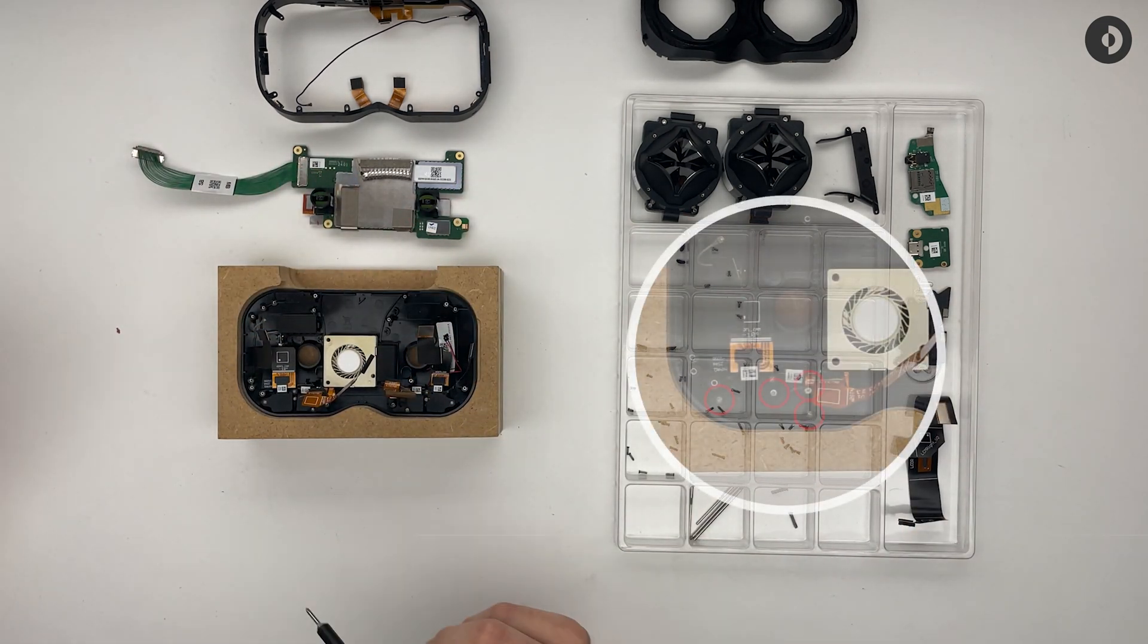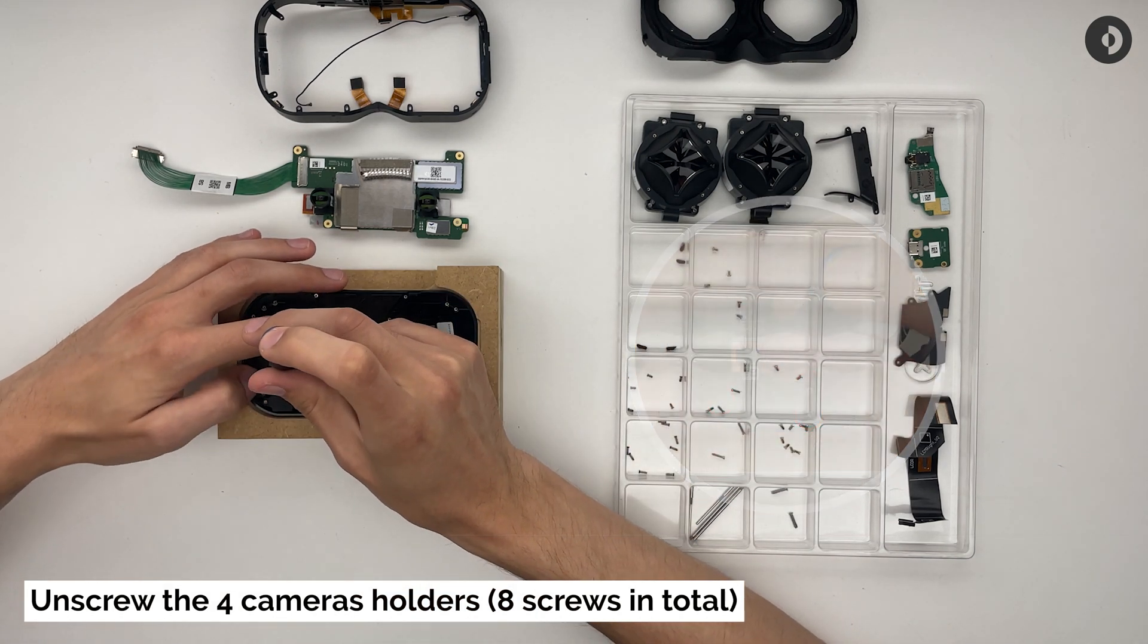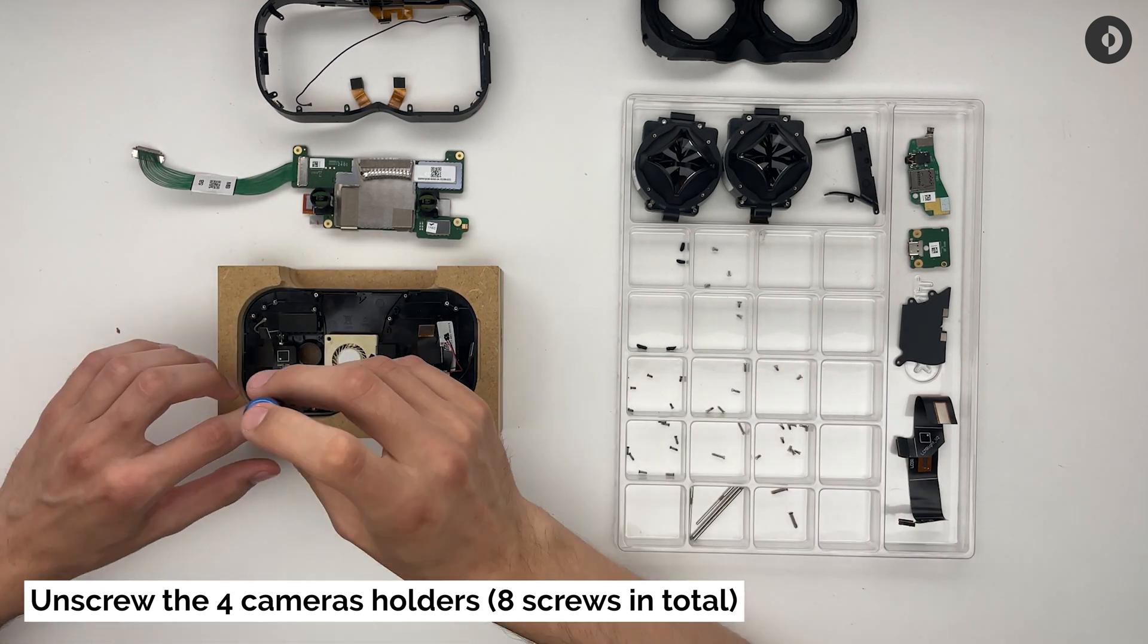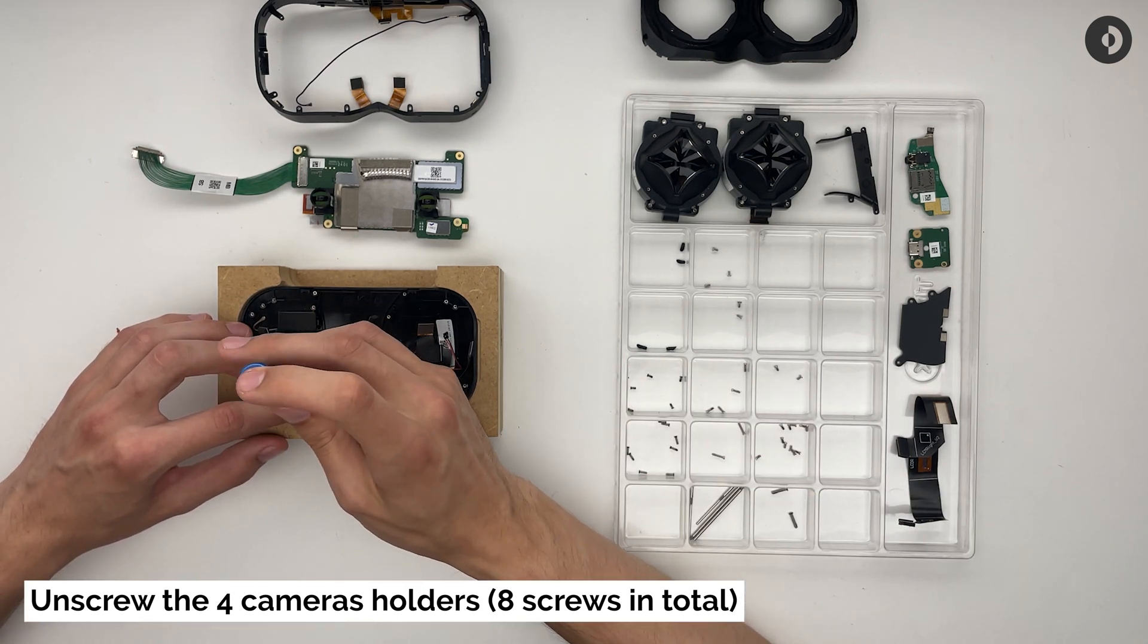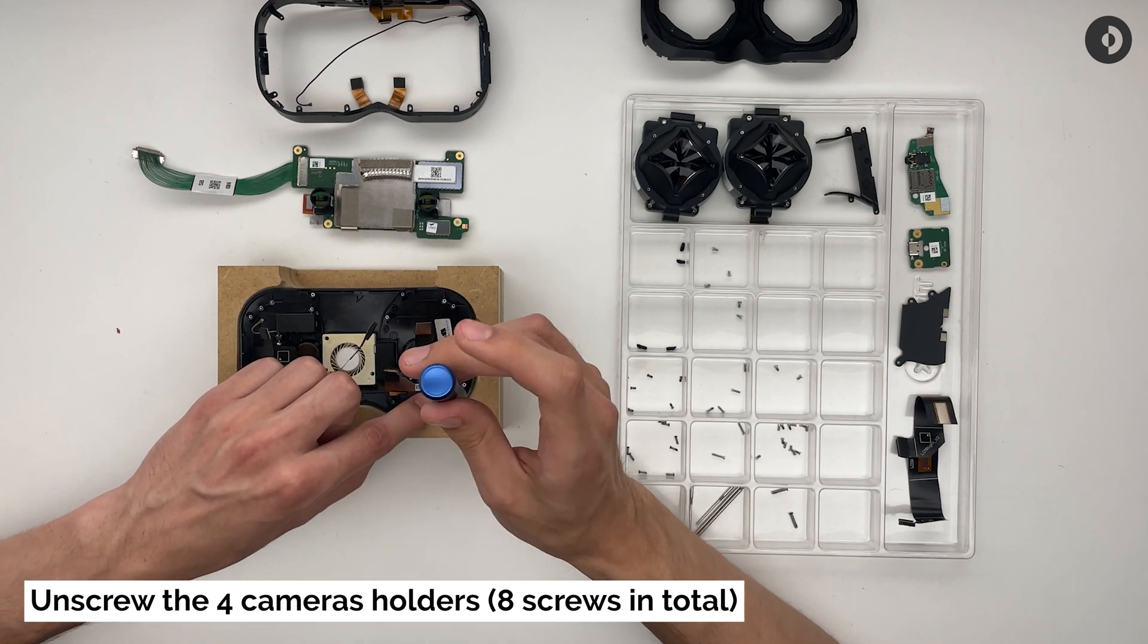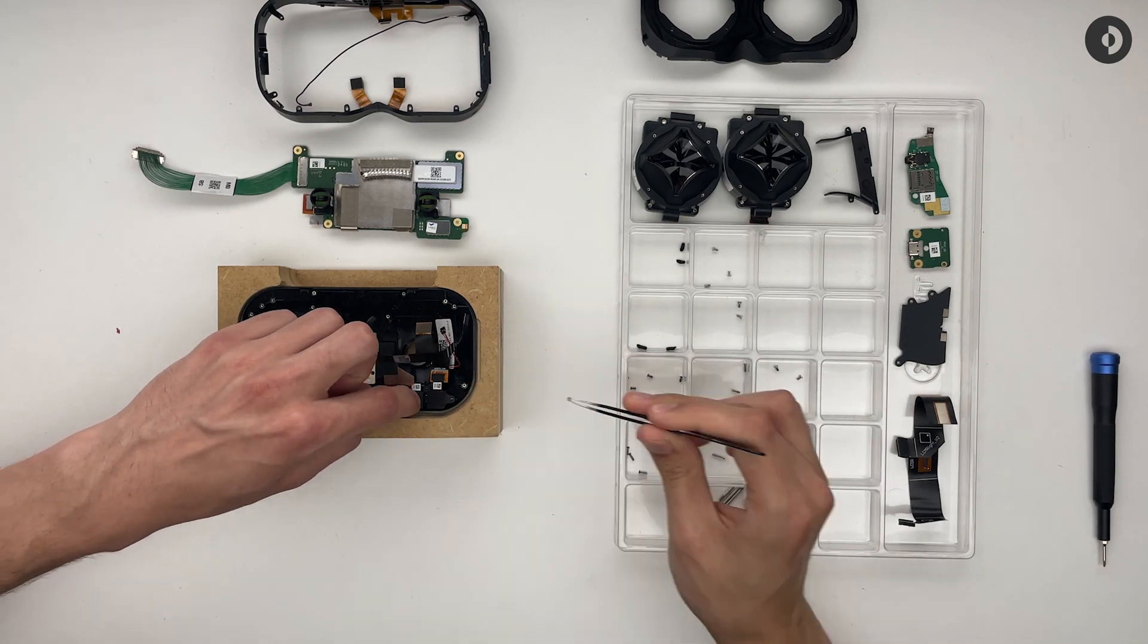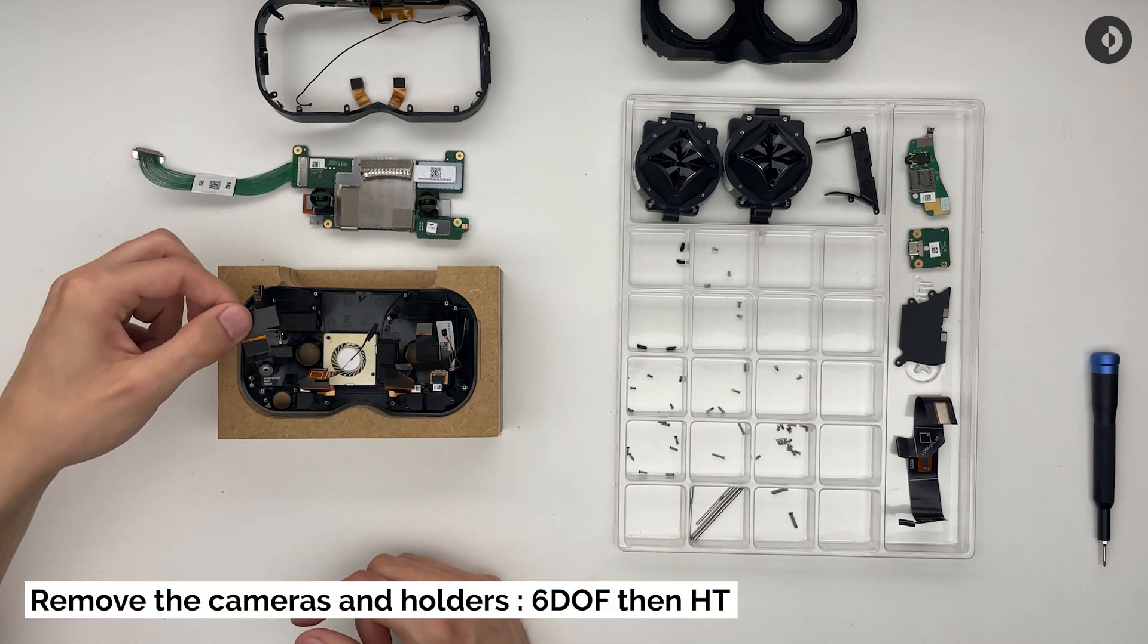At the bottom of the faceplate, left and right, you will find the six DOF and hand tracking camera holders. Each of them have two screws. By removing all eight of them, you will be able to extract the cameras from the faceplate. First remove the six DOF cameras and their flexible circuits.